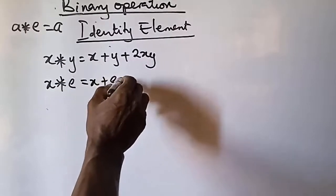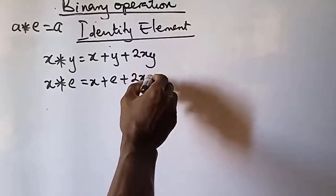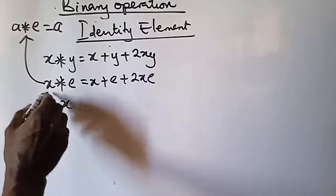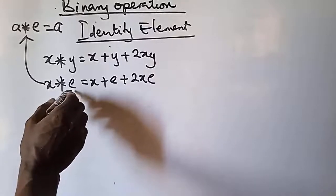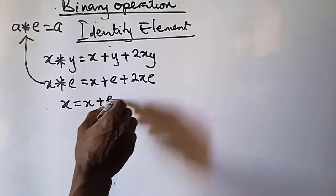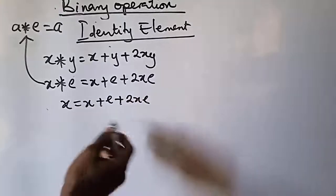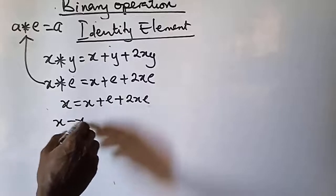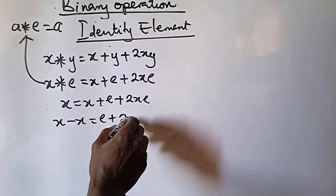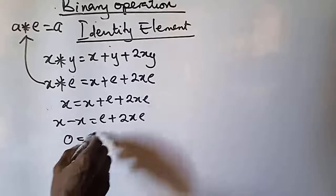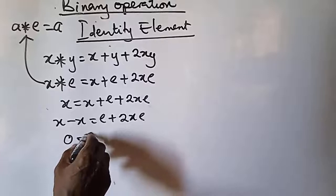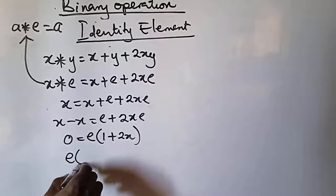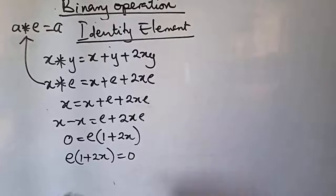Replacing y with e, we have x + e + 2xe. By our rule, x operation e equals x, so: x = x + e + 2xe. Collecting like terms, transposing: x − x = e + 2xe, which gives 0 = e + 2xe. Factoring: 0 = e(1 + 2x).